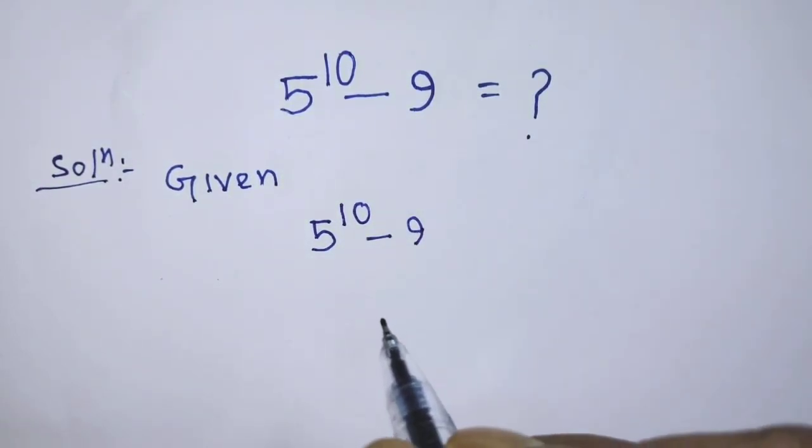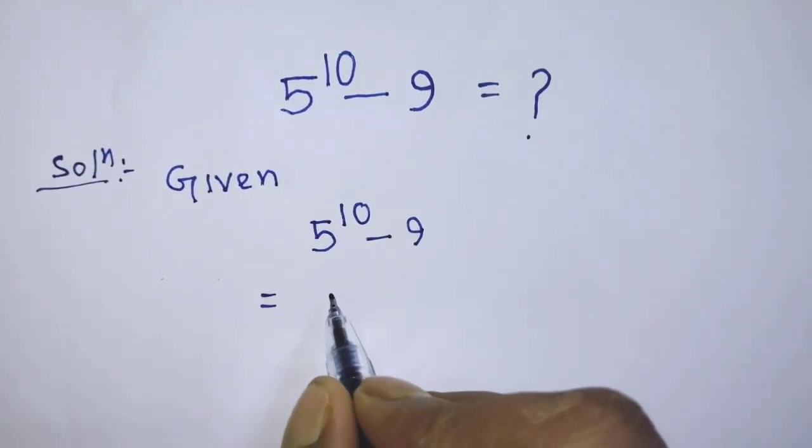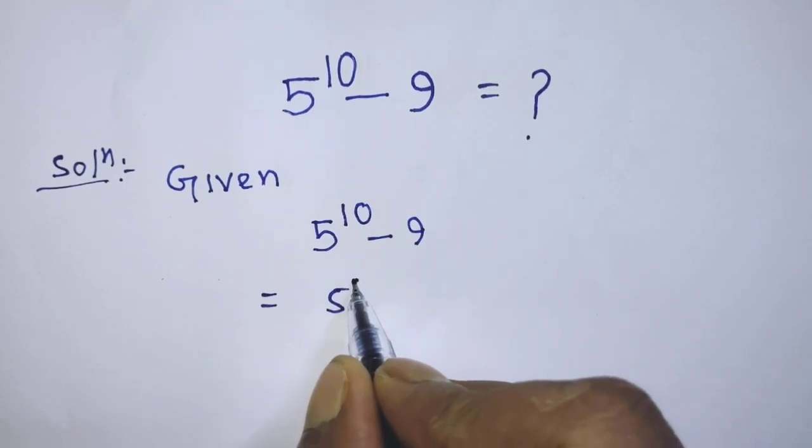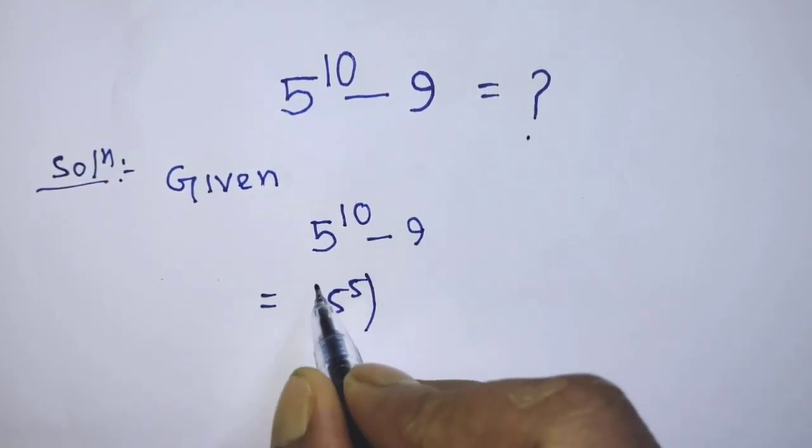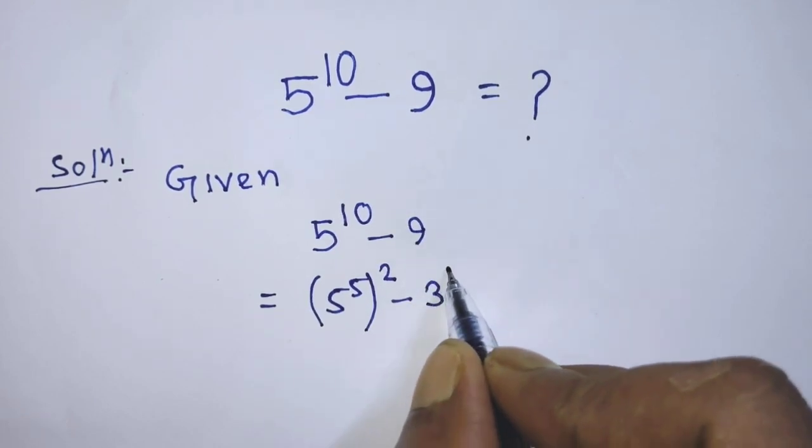In the first step of the solution, it will be 5 to the power 5 whole to the power 2 minus 3 to the power 2.